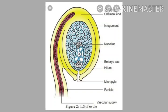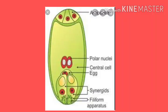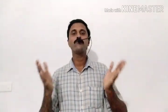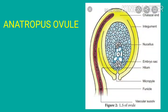The nucellus is a diploid parenchymatous tissue which provides nutrients to the cells of the embryo sac. Within the nucellus lies the embryo sac. At the chalazal end are 3 antipodal cells. At the micropylar end are 2 synergids and 1 egg cell, together called the egg apparatus. In the center is the central cell with 2 polar nuclei, also called secondary nuclei. So the embryo sac is a 7-celled, 8-nucleate structure. In the majority of angiosperms, the ovule is inverted, and is called an anatropous ovule.